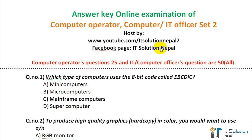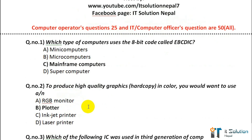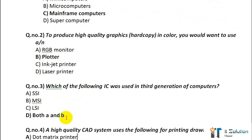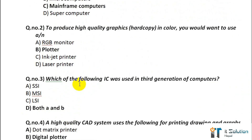Question number 1: Which type of computers uses the 8-bit code called EBCDIC? Its correct answer is option C — mainframe computers. Question number 2: To produce high quality graphics hard copy in color, you want to use a plotter.